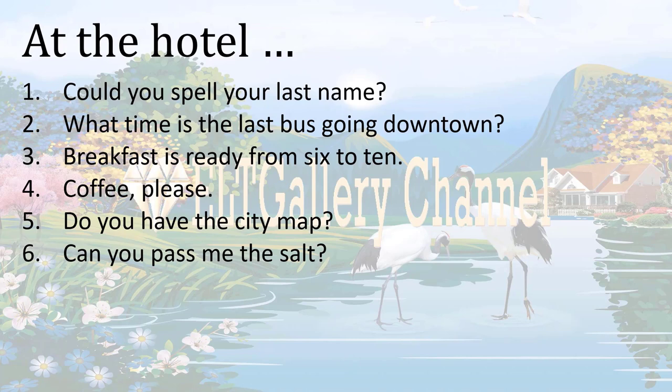Here we have different sentences. In the first two sentences we have questions, and also in the last two sentences. 'Could you spell your last name?' — here the receptionist probably asks the guest to spell his name, so the speaker asks for information. 'What time is the last bus going downtown?' is a similar sentence; it asks for a piece of information, namely the time for the last bus going downtown.